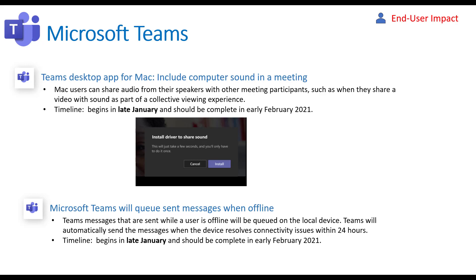This one is kind of cool: they're allowing you to queue up messages when you don't have an internet connection. Today, if you lose connection and try to send a message, it'll just fail. But now, if you've temporarily lost connection, it'll queue up that message. As long as you maintain connection within 24 hours, it'll still deliver that message to the user as intended. Otherwise, it will cancel out and error out, but it's a much better experience than what you have today.